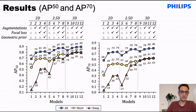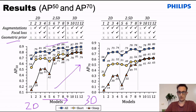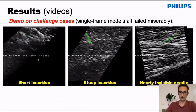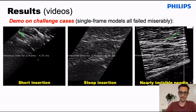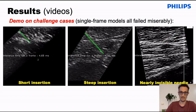This slide shows our results. We have the various models on the x-axis. As we go from a 2D model to 3D models on the right-hand side, we also apply the three improvements mentioned, and we can see that the average precision increases as we make improvements to the models. We also see quite a large improvement for short and steep insertions, which are challenging use cases. This applies for an average precision of 50 and also an average precision of 70. Utilizing the models that take into account the temporal information, we can see that the needles are detected successfully. But the 2D baseline model fails to detect the needles in any of these frames.